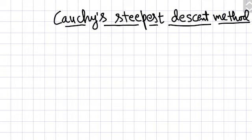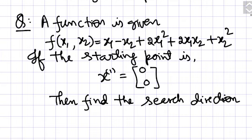First I will write a very simple numerical example so that you can understand the basics of this method. So here is the question: a function is given x1 minus x2 plus 2x1 square plus 2x1 x2 plus x2 square and one starting point is given to you, 0,0.